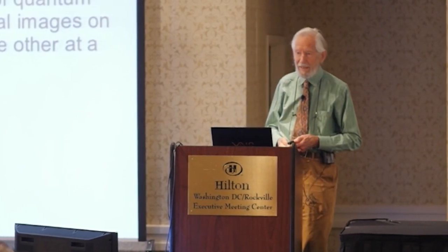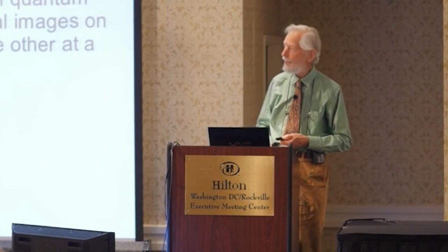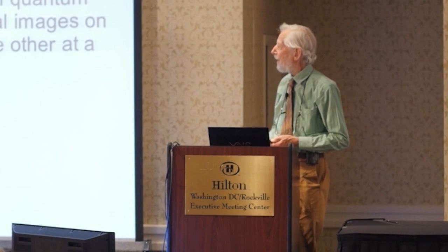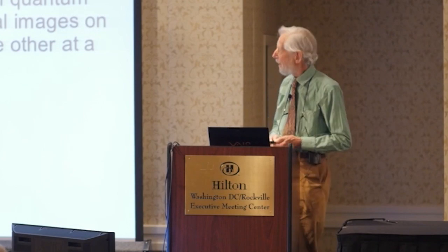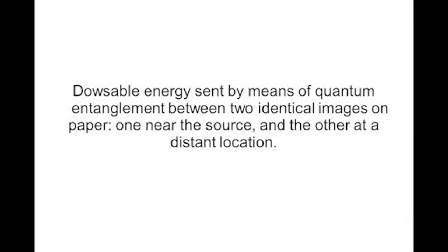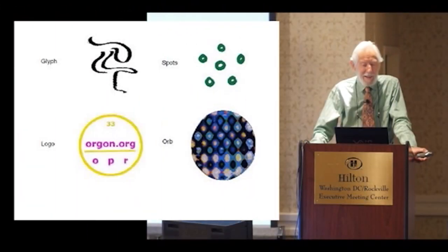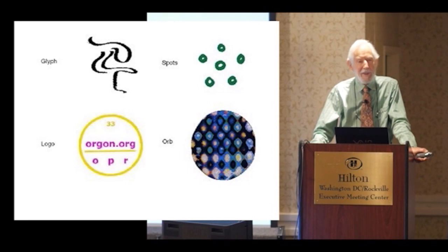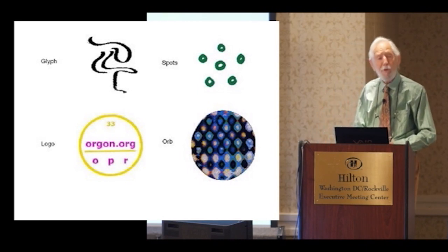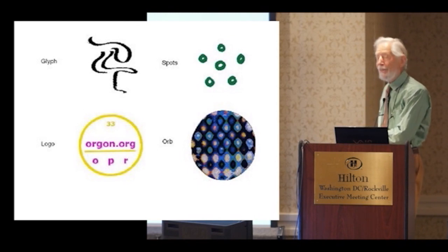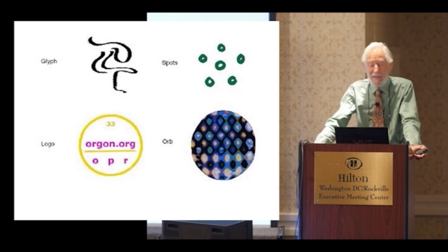This is a very important aspect in relation to the global meditation. It seems that dowsable energy can be sent non-locally by means of quantum entanglement between two identical images on paper, one near the source and the other at a distant location. I've done quite a lot of this using different kinds of images. Of course, two pieces of white paper don't work at all. What works best is an image which is both complex and unique, so that's the one I've been using quite a lot which I've generated myself. It's pretty unique.